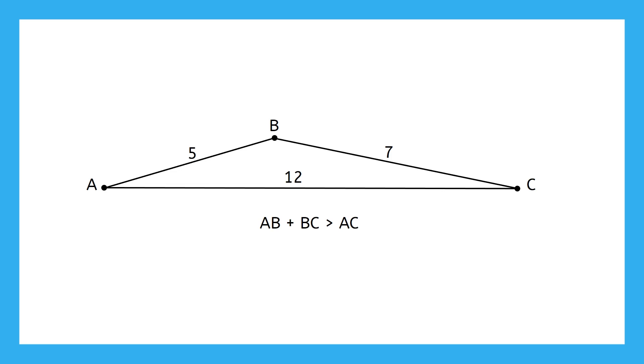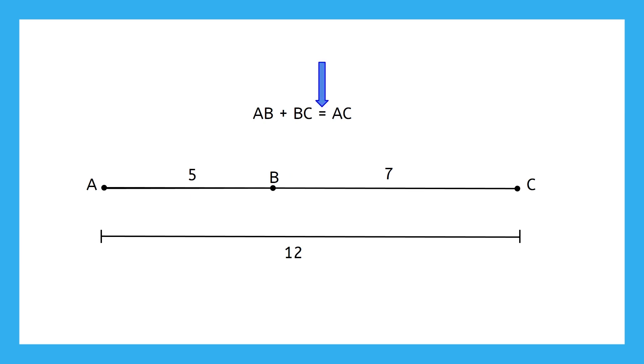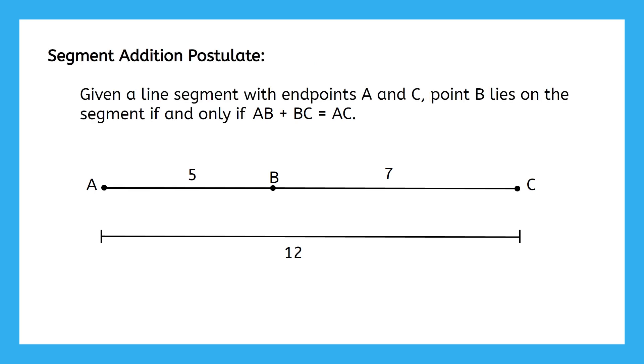Well, point B would have to move down so far that it's actually on Segment AC. Let's do a little rearranging now that we've moved point B down. And now we get to write an equal sign here like we wanted. This, my friends, is the Segment Addition Postulate.